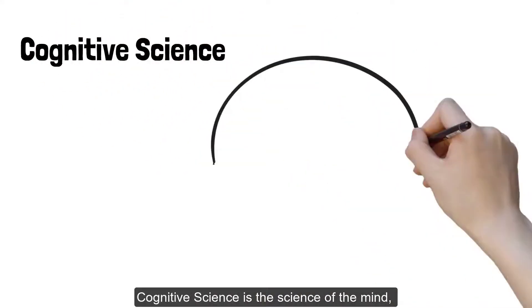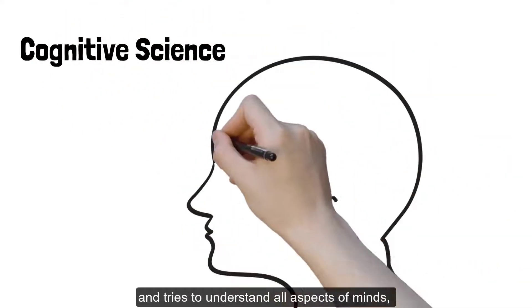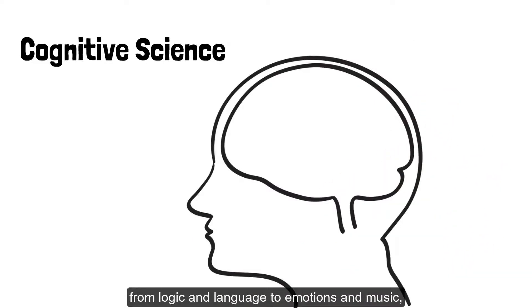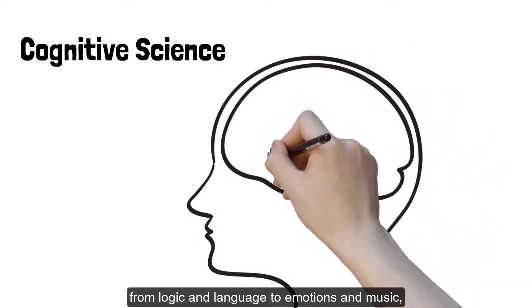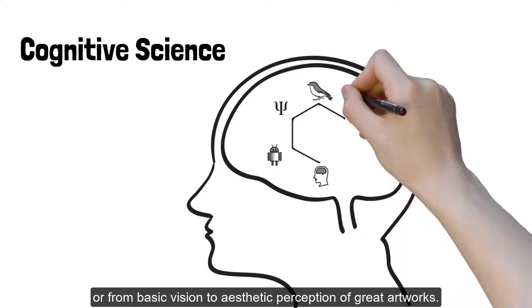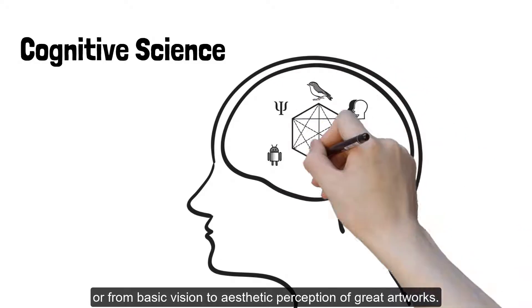Cognitive science is the science of the mind and tries to understand all aspects of minds, from logic and language to emotions and music, or from basic vision to aesthetic perception of great artworks.